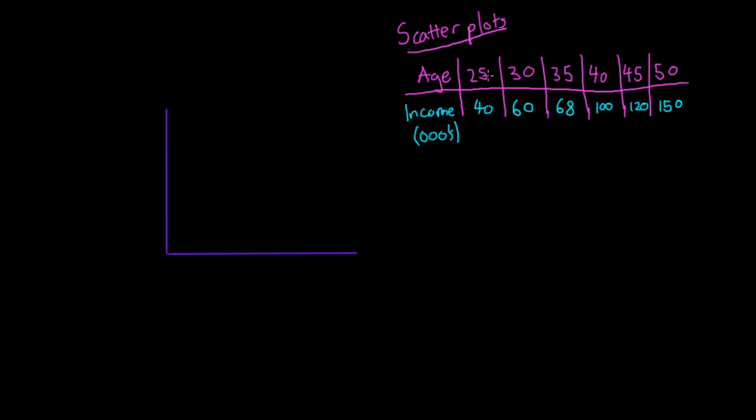I've got one person who was 25 and made $40,000, one who was 30 made $60,000, one at 35 made $68,000, one at 40 made $100,000, one at 45 made $120,000, and one at 50 made $150,000.